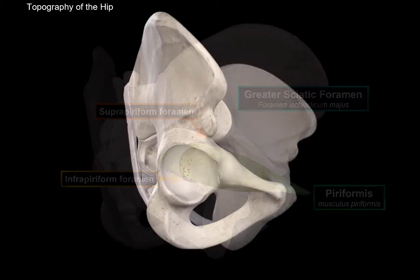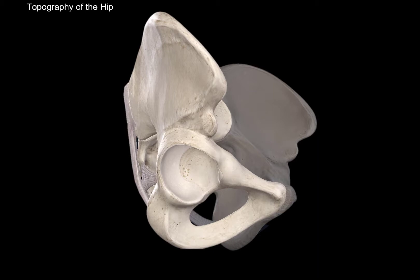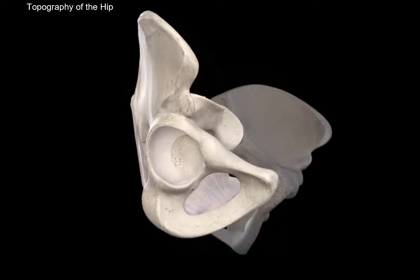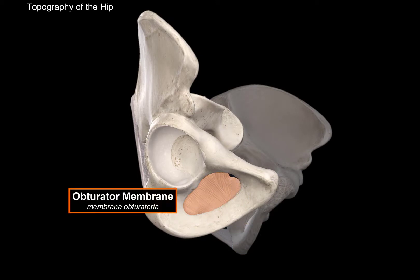Next is an opening you're probably very familiar with: the obturator foramen. It is covered by a membrane called the obturator membrane. However, there is a small canal which the obturator membrane leaves open, called the obturator canal. Structures like the obturator artery, nerves, and veins pass through it.